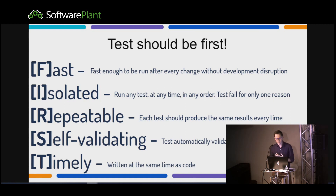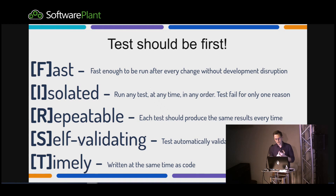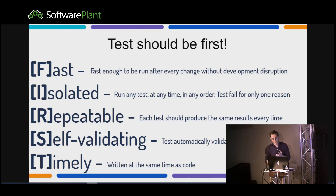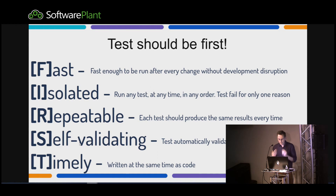You shouldn't say 'I'll write the code and maybe in two weeks I'll write the tests.' The first problem is that you commit code that isn't proven to be OK. The second is that you will never write that test — you'll never have time because you'll start writing more code.